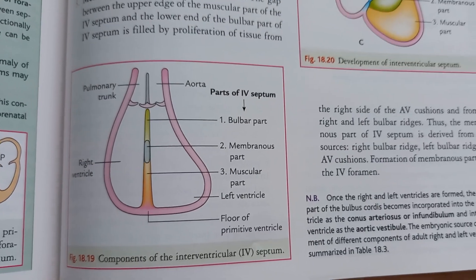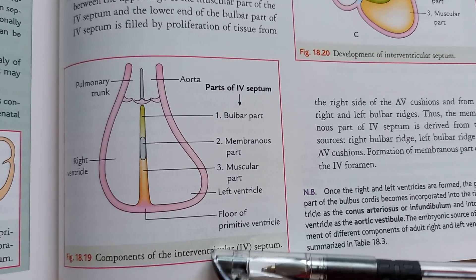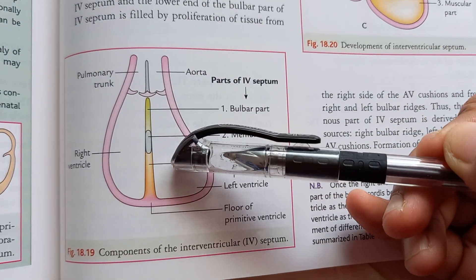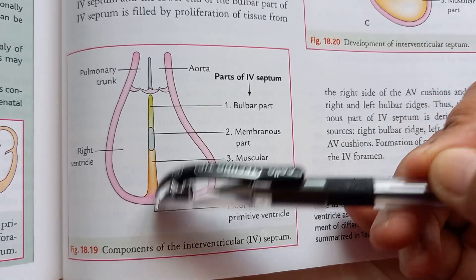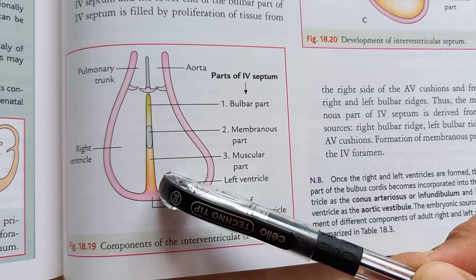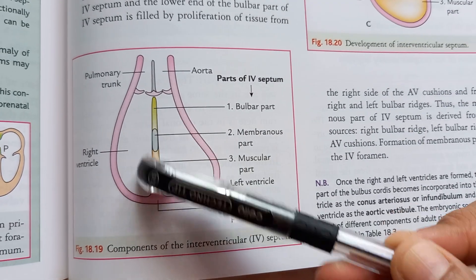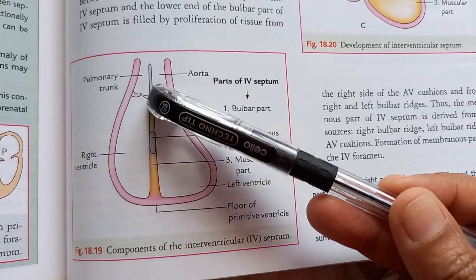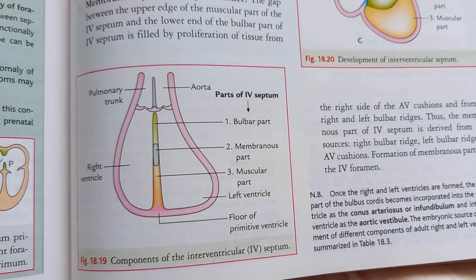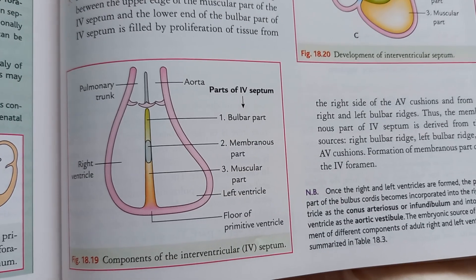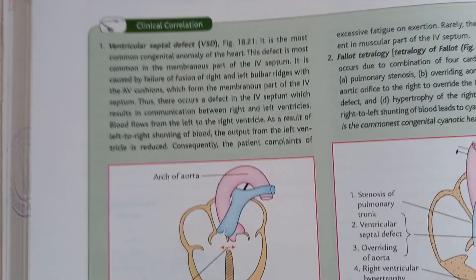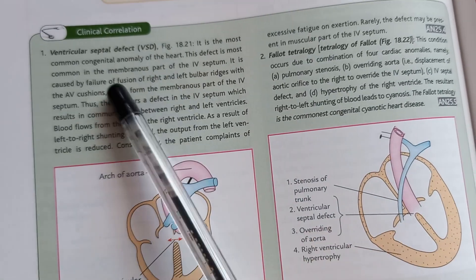Here you can see the components of the interventricular septum. Between the two ventricles you have the septum, which has a bulbar part, membranous part, and muscular part. Which one is more prone to ventricular septal defect? It is the membranous part — and this book confirms that, saying it is most common in the membranous part of the interventricular septum.